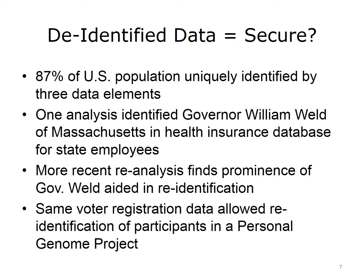So if health data has been de-identified, that means the identities of the individuals whose data it is are secure, right? Not necessarily. Research done by Sweeney and colleagues found, for example, that 87% of the U.S. population can be uniquely identified by using as few as three data elements: the five-digit zip code of where they live, their gender, and their date of birth. Think about that — if someone has just these three pieces of data, they can identify the individual to whom it belongs 87% of the time.